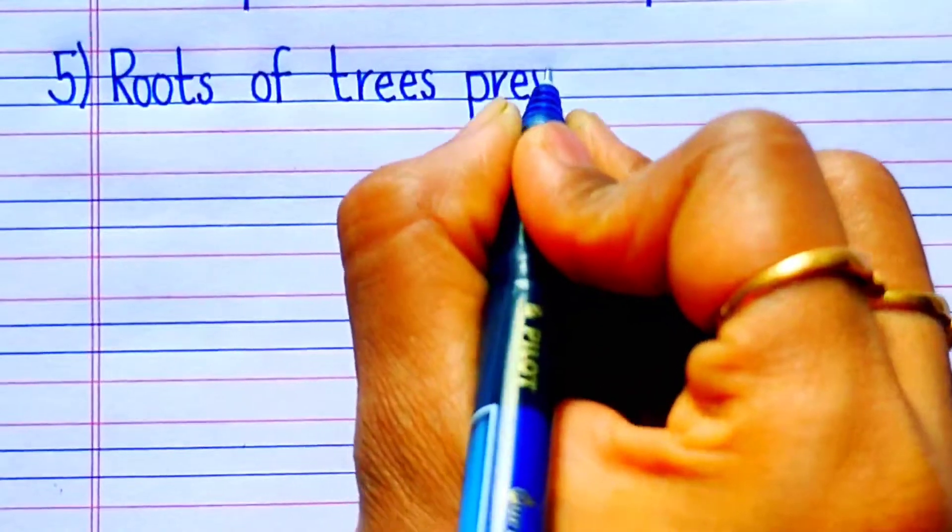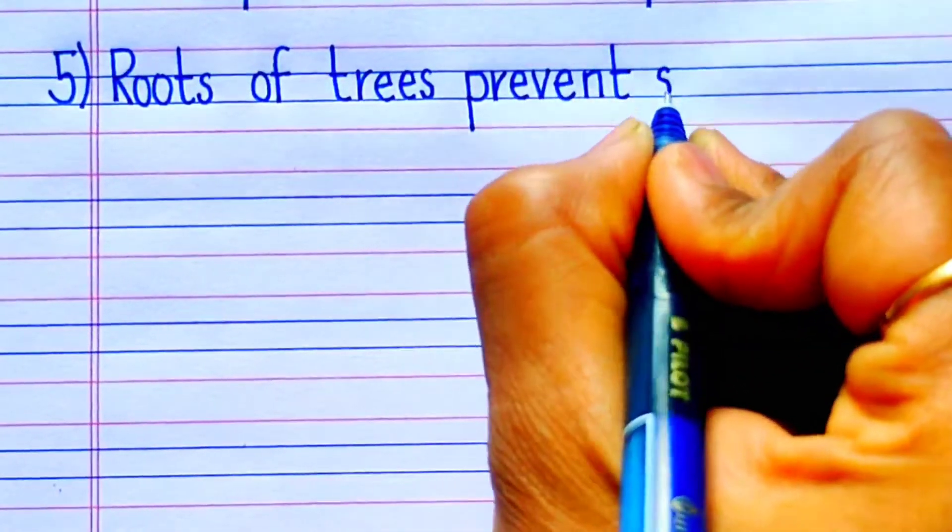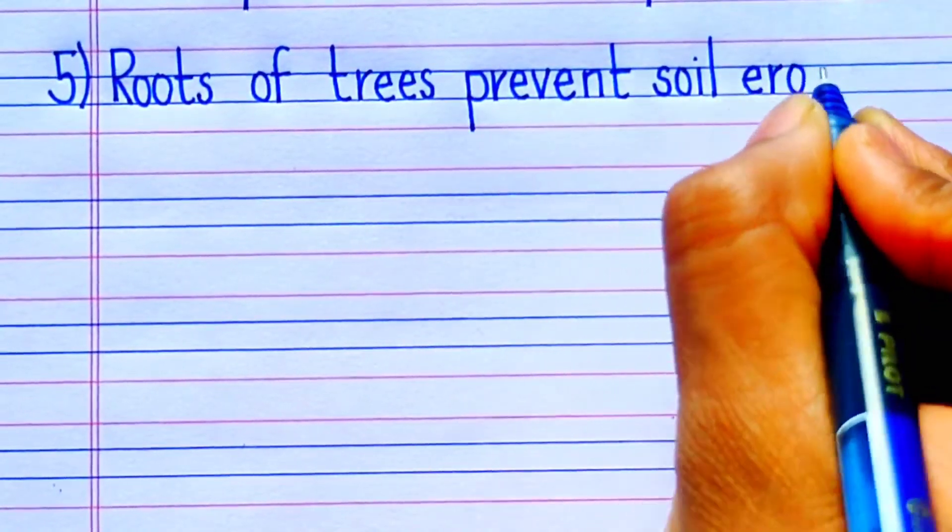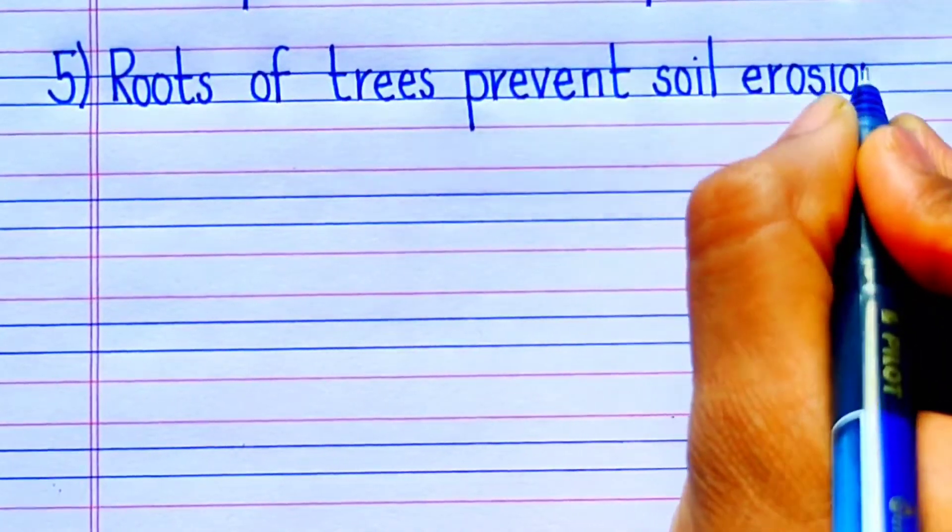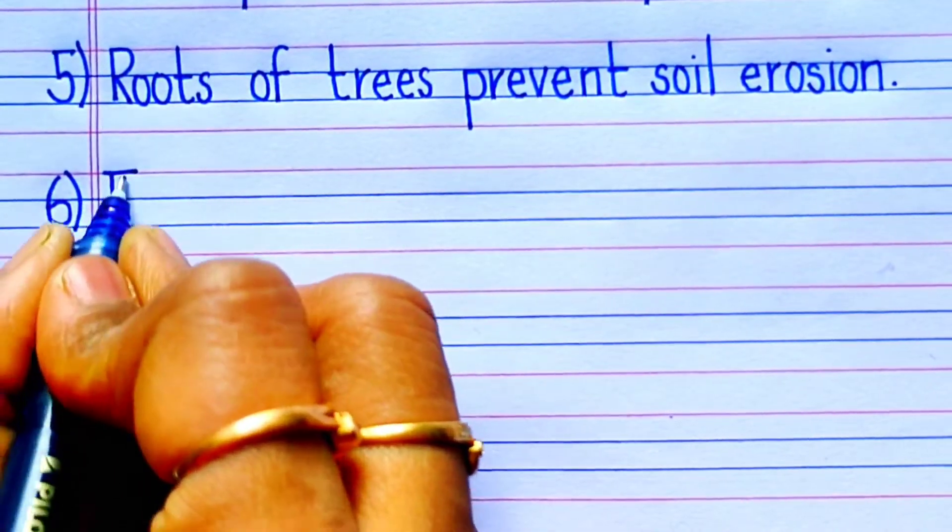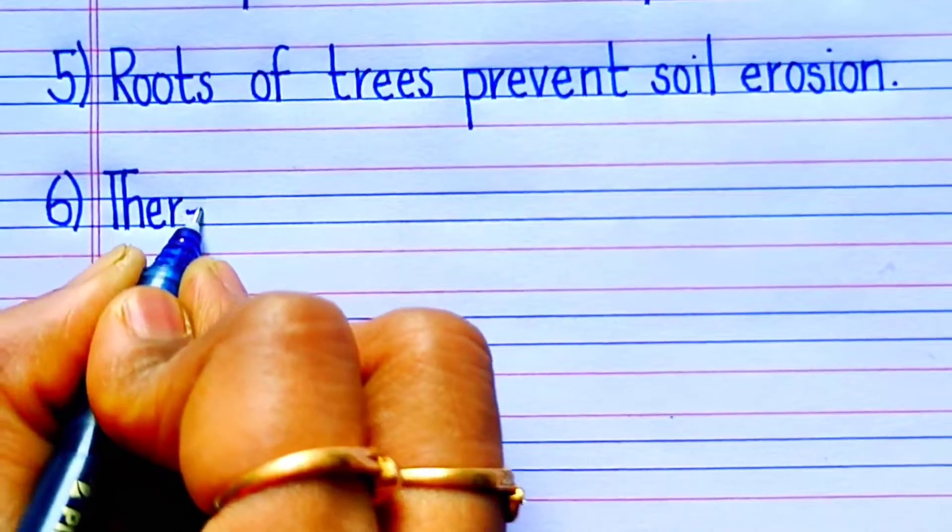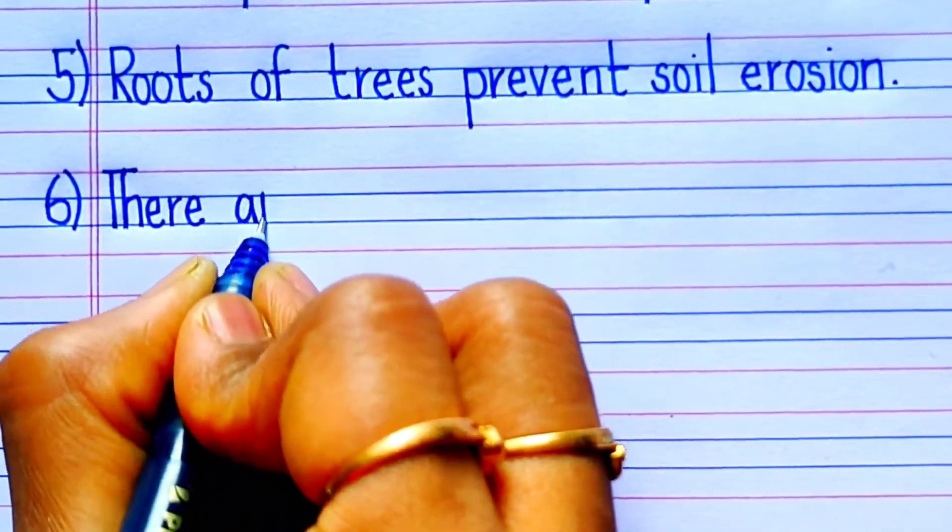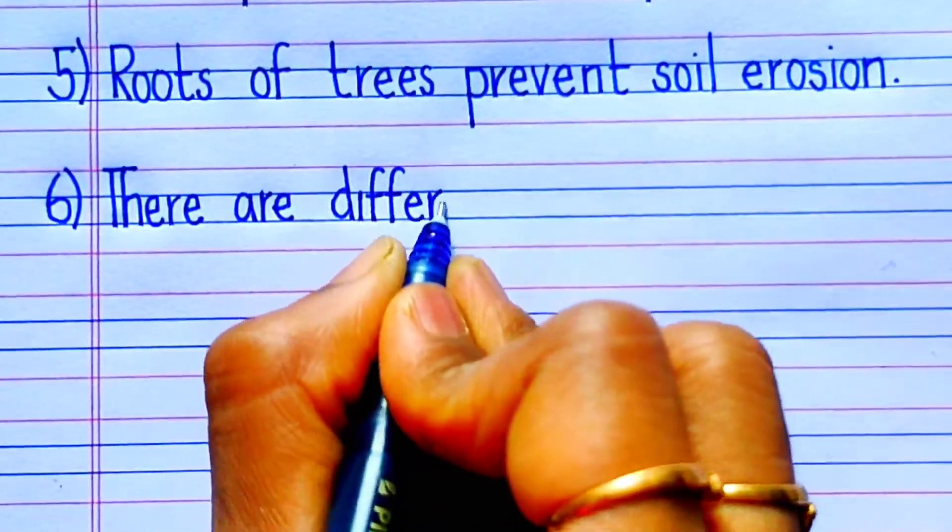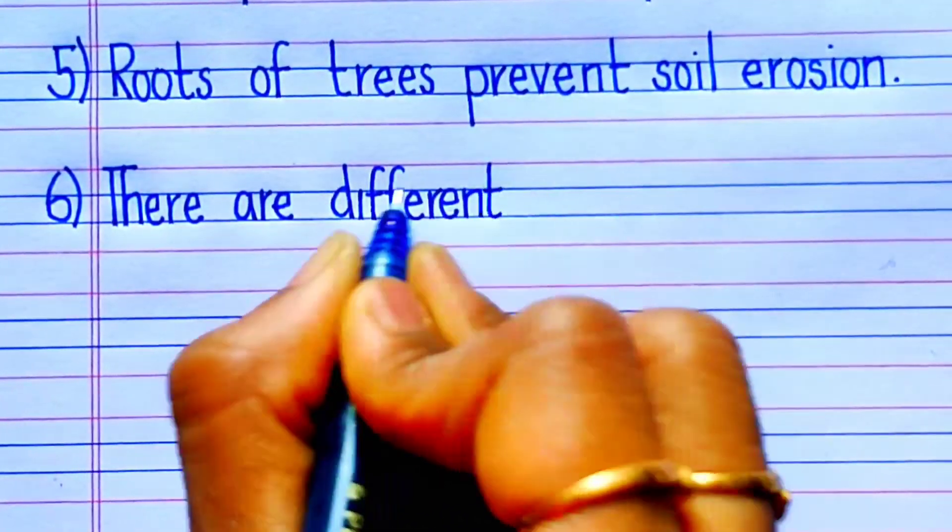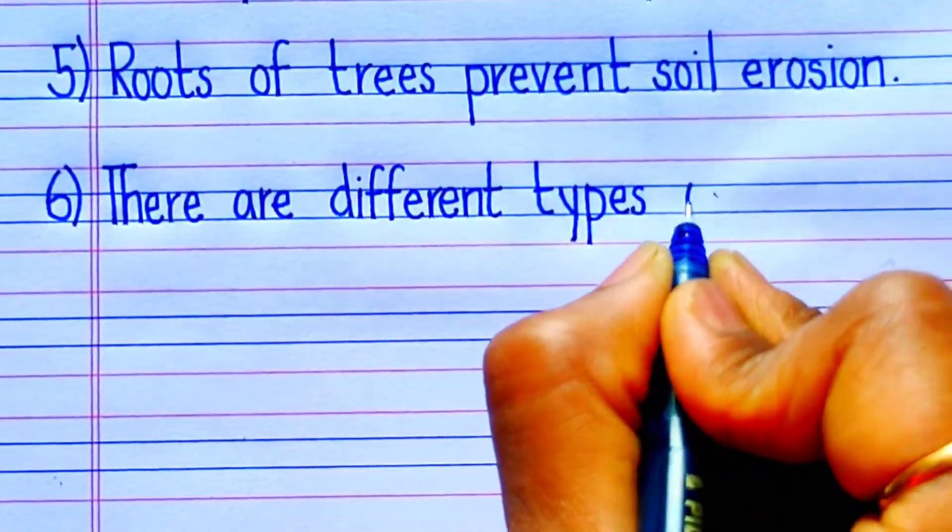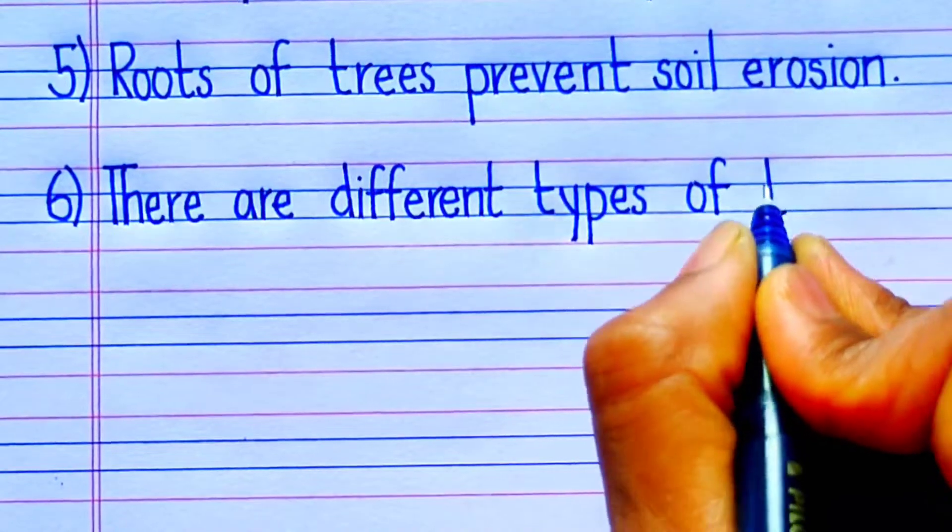The fifth sentence is: Roots of trees prevent soil erosion. The sixth sentence is: There are different types of trees.